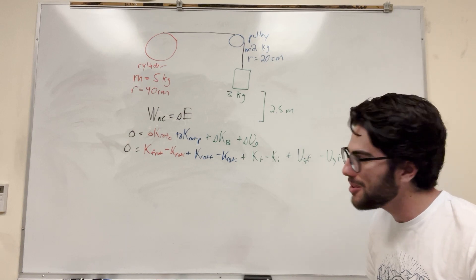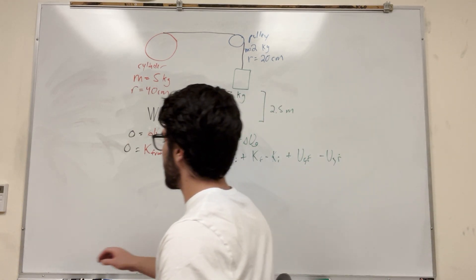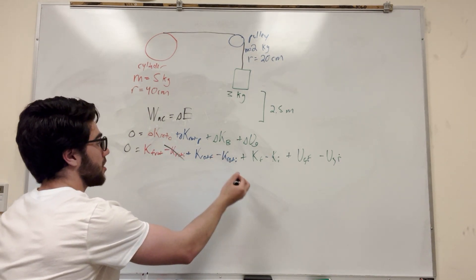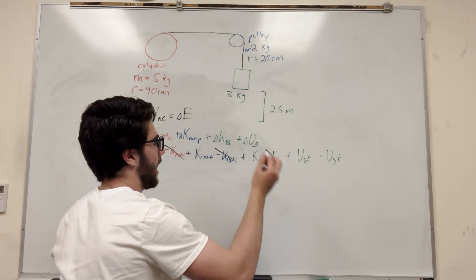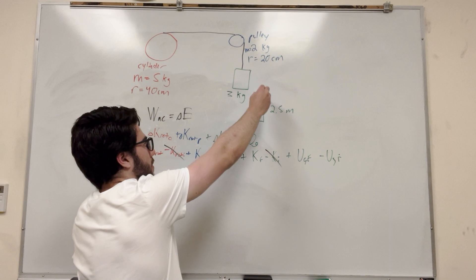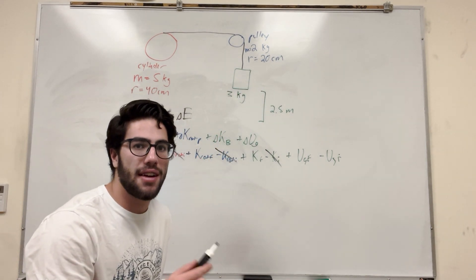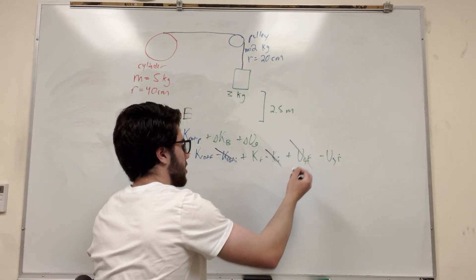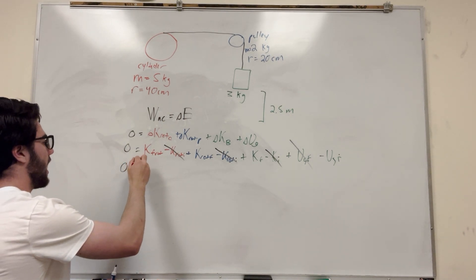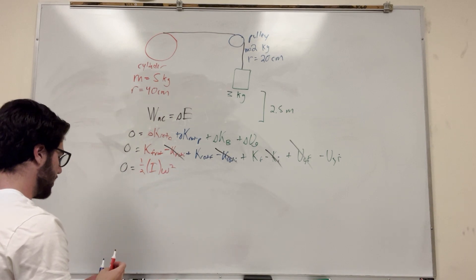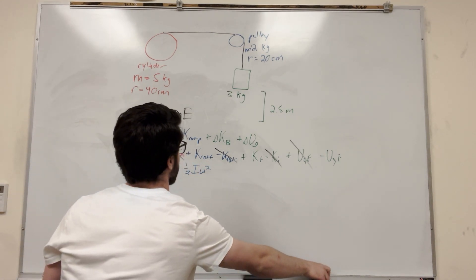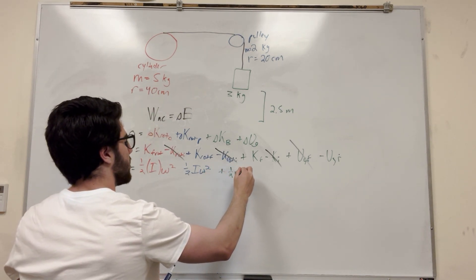We want to get rid of as much as we can. Our system starts at rest, so there's no kinetic energy initially — we can drop K-rotational-initial for both pulleys and the kinetic energy initial. We assume the initial state is 2.5 meters above, and the final height is zero, so gravitational potential final is zero. K-rotational expands to one-half times I times ω-squared, and kinetic energy is one-half mass velocity squared, and gravitational potential is mass times gravity times height.